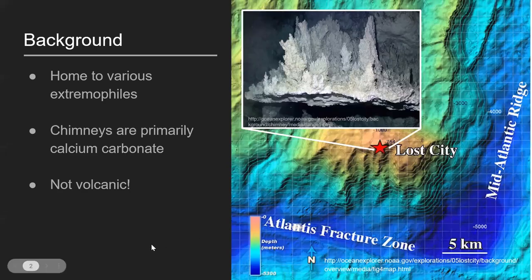Just for a little bit of background information, the Lost City is a hydrothermal vent field that is home to various extremophiles such as methanogens and sulfur reducers. The Lost City itself is located along the Mid-Atlantic Ridge, specifically at a site called the Atlantis Massif.